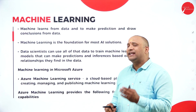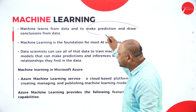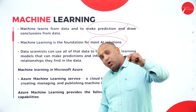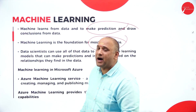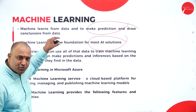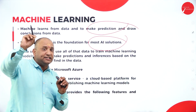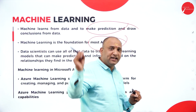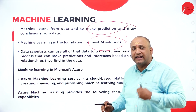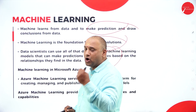Now what is machine learning? Machine learning learns from data to make predictions and draw conclusions. It is the foundation of most AI solutions. Whatever AI solutions we are talking about today are built on this foundation. Whatever answers you are getting in ChatGPT or any other AI model — the base is your machine learning system.